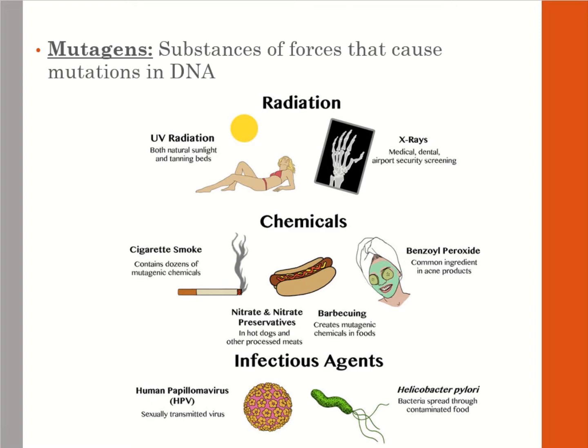Chemical mutagens include cigarette smoke, nitrate and nitrite preservatives, barbecuing — which creates mutagenic chemicals in food — and benzoyl peroxide, a common ingredient in acne products. There are also infectious agents like HPV, which is a sexually transmitted virus, and Helicobacter pylori, a bacteria spread through contaminated food.